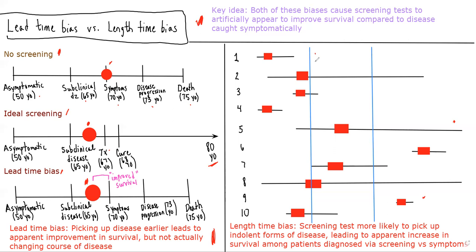As depicted by these blue lines, if we're taking these cross-sectional slices of time and looking at whether patients have disease at this one point in time, we're much more likely through screening to pick up these long, indolent courses of disease because they just stretch for much longer. With each of these blue lines noting different time points in which screening was conducted, in either case we're much more likely to pick up diseases such as numbers two, five, and eight than diseases like numbers nine, three, and four, where the time from disease onset to death is so short. And that's basically the idea for the length time bias — a screening test, because it's doing this cross-sectional sampling, is much more likely to pick up indolent forms of disease. Therefore, if you compare patients who have the disease detected through screening tests versus those detected through symptoms, it's going to lead to this apparent improvement in survival among those detected through screening. But it's really not because we're detecting and curing them — it's just that screening tests are much more likely to pick up those long, indolent courses of disease.